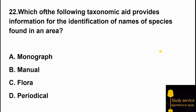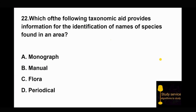Question 22: Which of the following taxonomic aids provides information for the identification of names of species found in an area? Option A: monograph. Option B: manual. Option C: flora. Option D: periodical. The manual provides information about species found in a particular area, so Option B is the right answer.